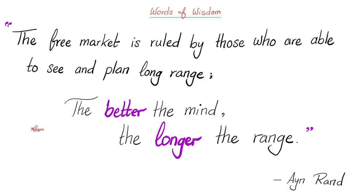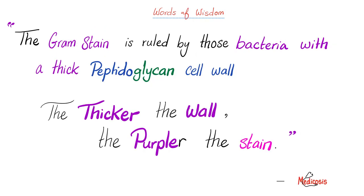Now let's talk about the gram-stain technique. To paraphrase: the gram stain is ruled by those bacteria with a thick peptidoglycan cell wall — the thicker the wall, the more purple the stain. But if your wall is thin, you're going to be pink. Since gram-positive bacteria have a thicker cell wall, they will appear purple, and since gram-negative bacteria have a thinner cell wall, they will appear pink.